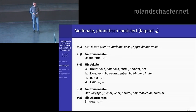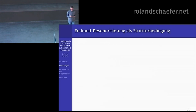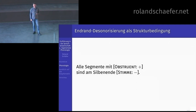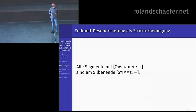Das ist im Grunde nichts anderes als das, was wir letzte Woche besprochen haben, wie die Laute artikuliert werden — jetzt einfach systematisch mit Merkmalen und Plus/Minus aufgelistet. Wenn wir das so haben, können wir sehr kompakte Aussagen treffen. Wir können Strukturbedingungen griffig formulieren: zum Beispiel »alle Segmente mit [+Obstruent] sind am Silbenende [-Stimme]«. Wenn ein Obstruent am Silbenende steht, darf da kein Stimmton sein — und wenn das lexikalische Wort einen hätte, muss der weg. Darauf kocht die gesamte Auslautverhärtung herunter.